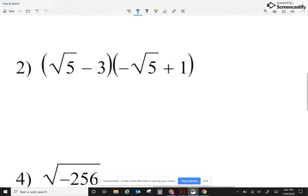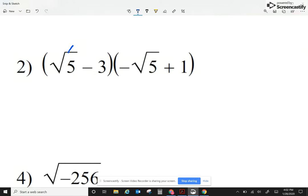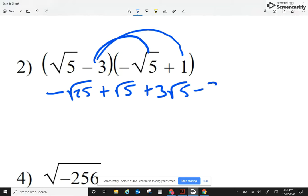Now in multiplication, let me distribute the radical 5. Whole numbers with whole numbers, radicals with radicals. So when I look at the first case, I have a negative sign, radical 25. Now when I go radical 5 times 1, that's basically 1 radical 5. Now when I distribute this way, I get positive 3 radical 5 minus 3.